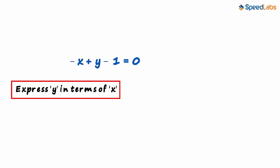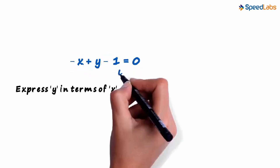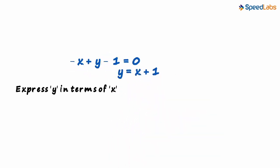First, we express y in terms of x. Basically, we just want to have the variable y on the left-hand side. So transposing the other two terms to the right-hand side, we can write y as x plus 1.